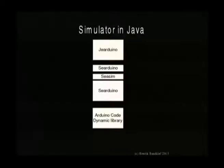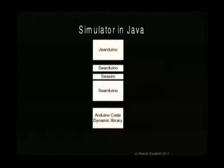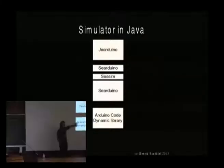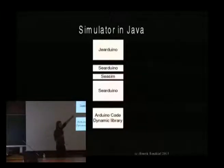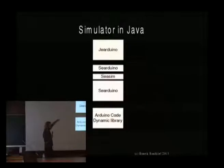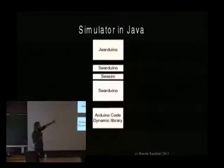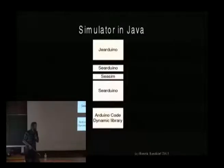There are a couple of other simulators, but I'm running out of time, so I'll just show the Java architecture. This is the Arduino code built as a shared object — it's loaded by the Arduino. We have a simulator API called CSIM. On top of that, we have a Java class that wraps the simulator into a Java interface. And the Arduino — we're not very good at names — is the Java simulator.